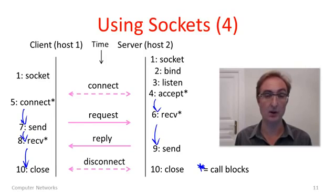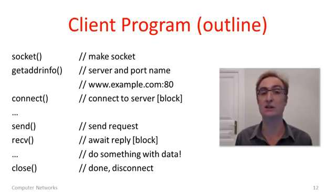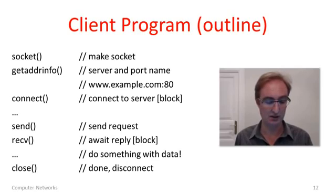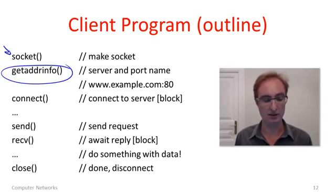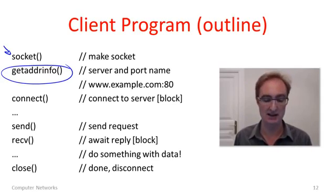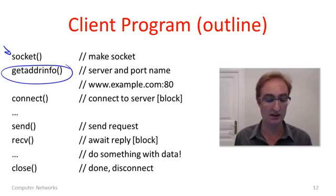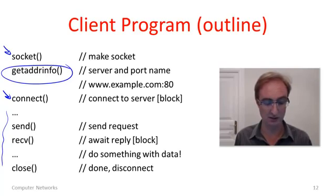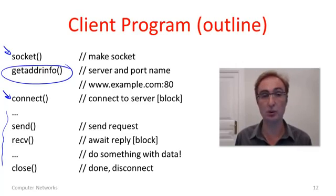Now let's look at the client side separately. We start with socket, then there's GetAddrInfo — a translation mechanism that converts high-level hostnames like www.example.com on port 80 into IP address numbers that the socket calls actually use. Then we follow the same sequence of calls: connect, send, receive, and close, executing all the steps previously outlined for the client program.